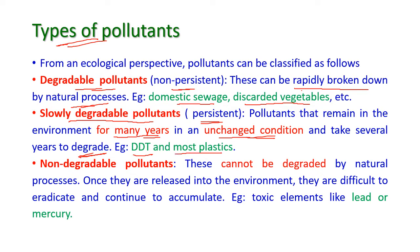The third type is non-degradable pollutants. These cannot be degraded by natural processes, and once they are released into the environment it is very difficult to eradicate them. They also continue to accumulate in the environment. Examples include toxic elements like lead and mercury.